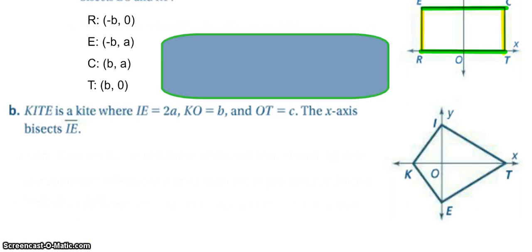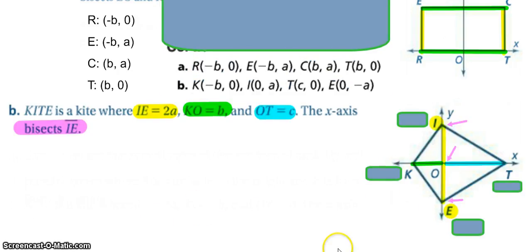If you have yet to do so, go ahead and try B, get the values at each of the points. All right, so since I know that IE is 2A and the X axis bisects IE, I know it gets cut in half so they're both equidistant apart, so they will both be A away.